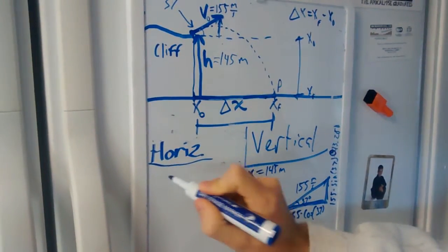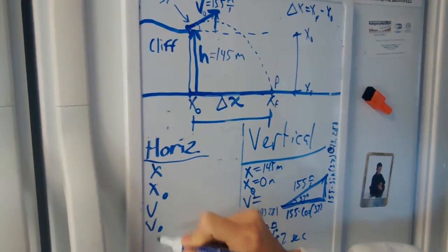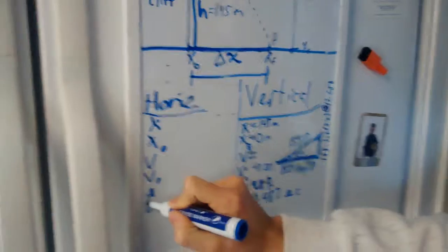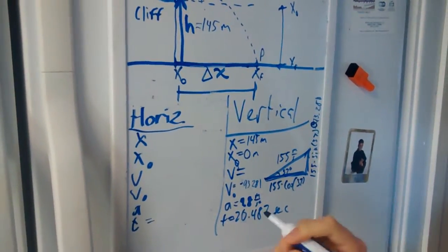We have x, x0, v, v0, a, and t. t is the same as we established, 20.482 seconds.